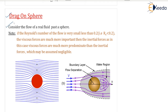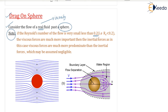Let us consider the flow of a real fluid past a sphere. When you talk about a real fluid, that means it must have viscosity. If the Reynolds number of the flow is very small — less than 0.2, that is Re < 0.2 — the viscous forces are much more important than the inertial forces.